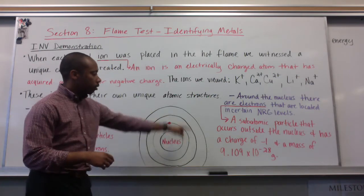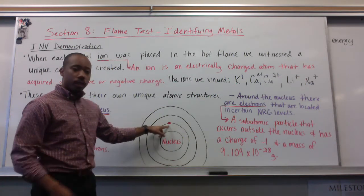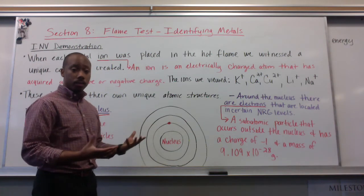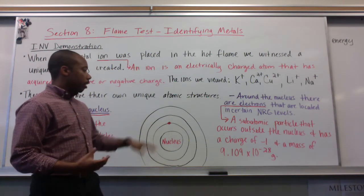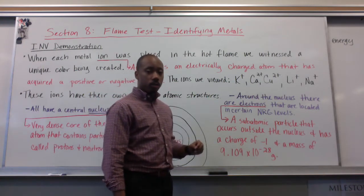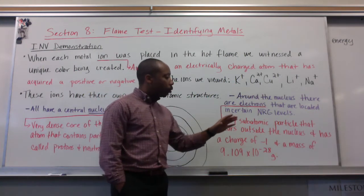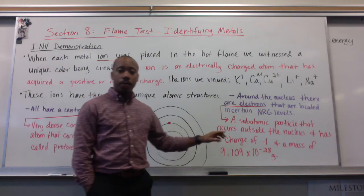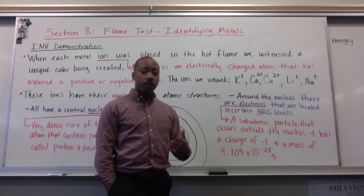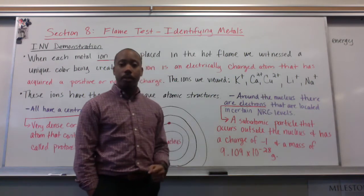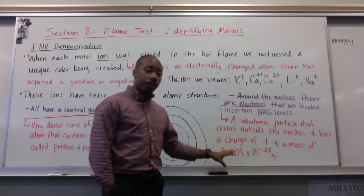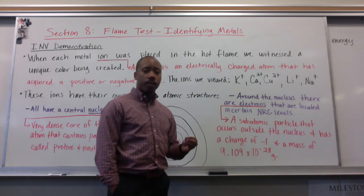These electrons are arranged in specific energy levels, represented by these rings here. Atoms can have many, many electrons. An electron is a subatomic particle that occurs outside the nucleus. It has a charge of negative 1 and a mass of 9.109 × 10⁻²⁸ grams — you don't have to memorize that number, but it's just there to let you know how small they really are.